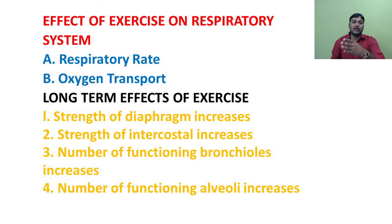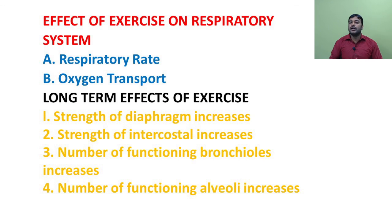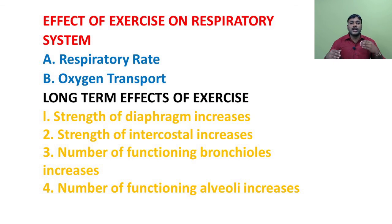Regarding respiratory rate: during exercise, increased demand for oxygen increases the rate of breathing. The normal resting breathing rate of an adult is about 14 per minute; during strenuous exercise it can increase up to 32 per minute. Regarding oxygen transport: demand for oxygen increases during exercise and is transported to the muscle level by increases in respiration rate. The sympathetic nerve stimulates veins to constrict, leading to more blood returning toward the heart, which can increase the total stroke volume of the heart by 30 to 40 percent.